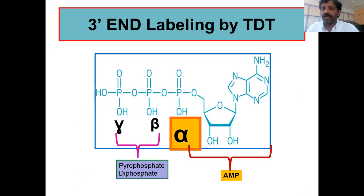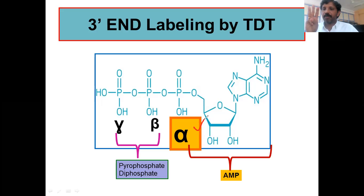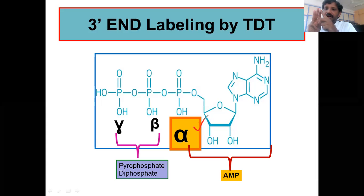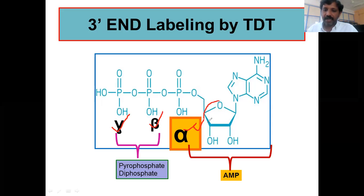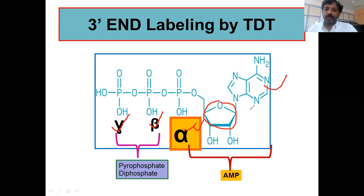The most important thing to discuss under three prime end labeling is the key label used. Initially, radioactive nucleotides were used as labels. For three prime end labeling, we need ATP which is radio-labeled at the alpha phosphate. ATP has three phosphates — alpha, beta, and gamma — where gamma is terminal, beta is in between, and alpha is attached to the deoxyribose, which is attached to the nitrogen base.